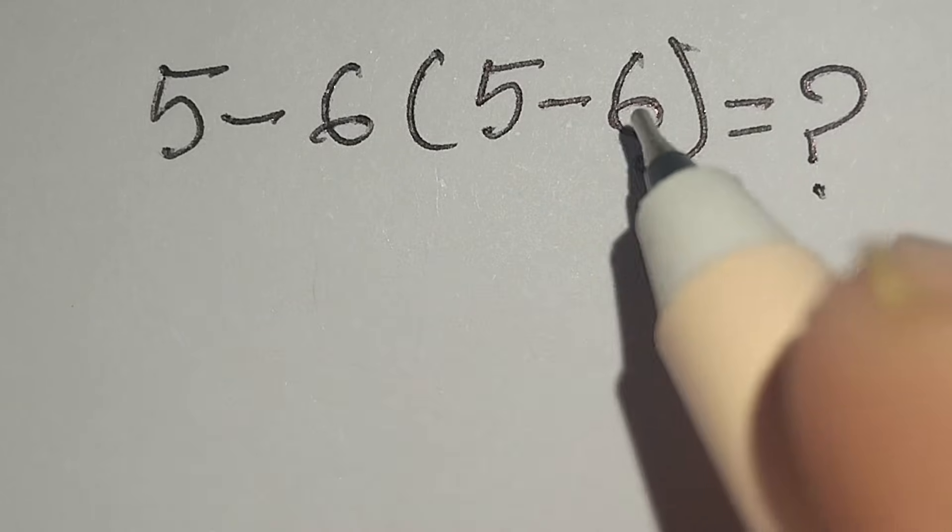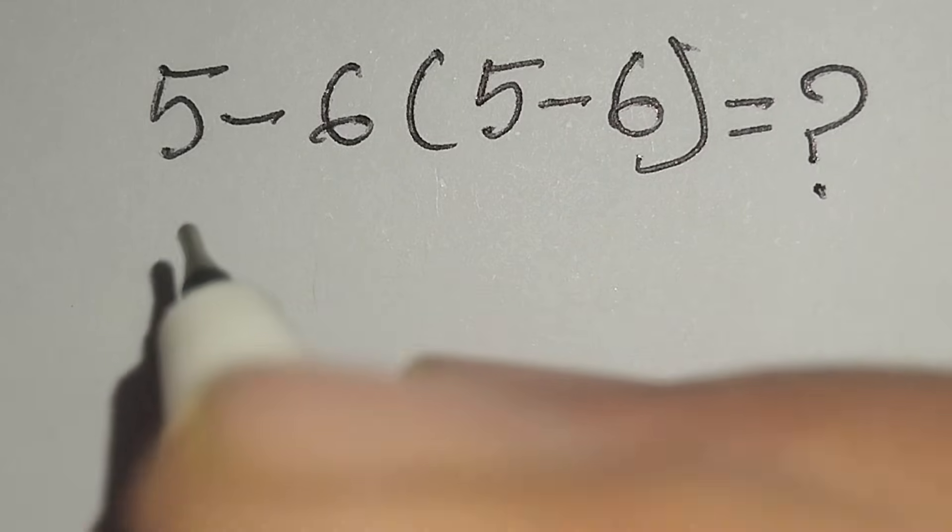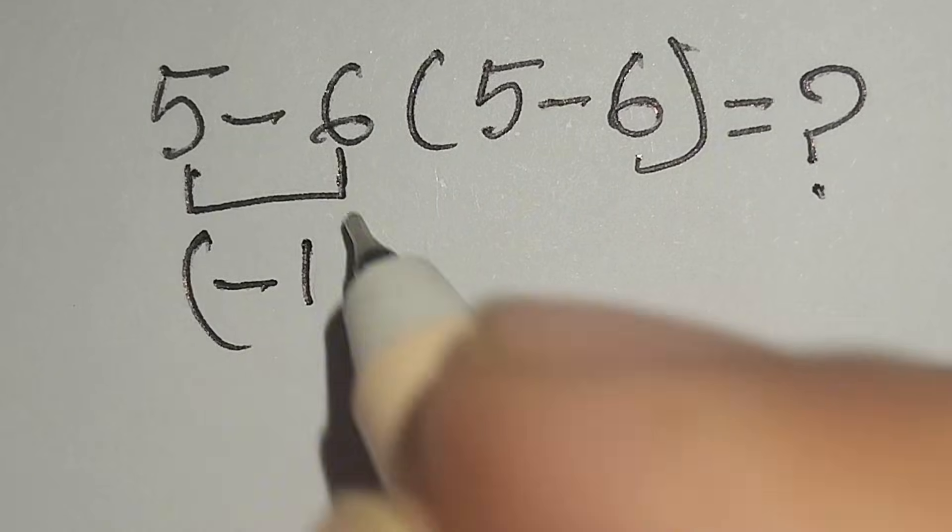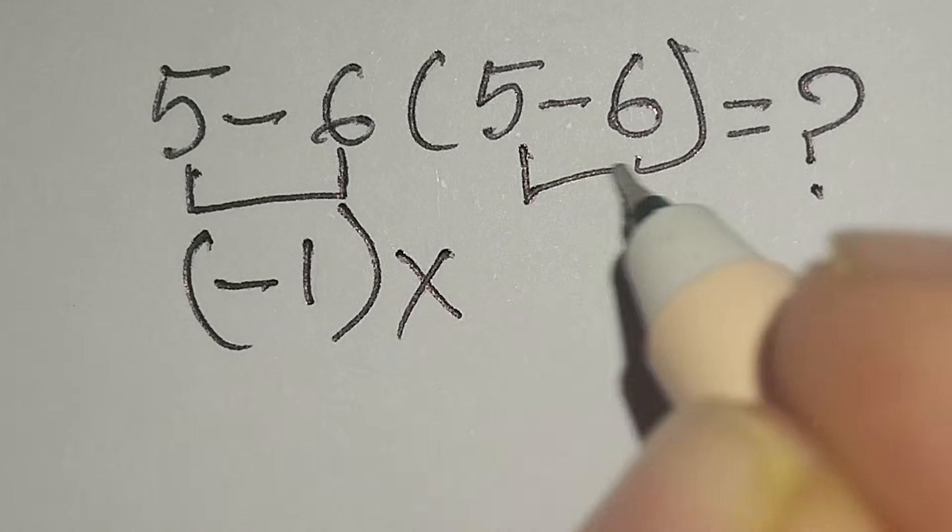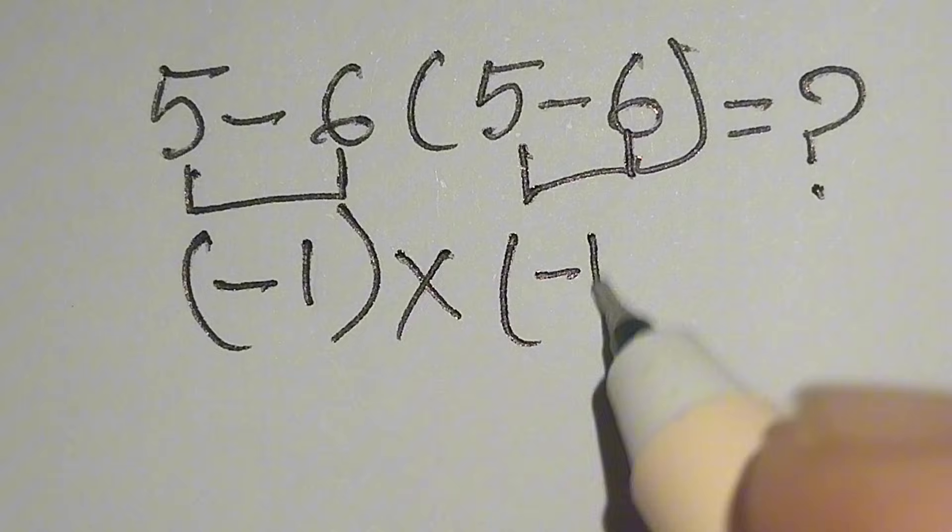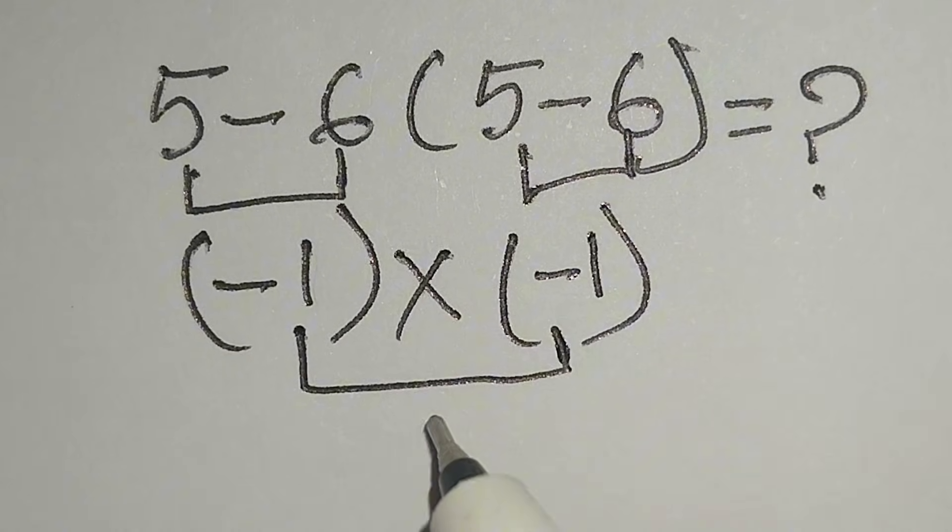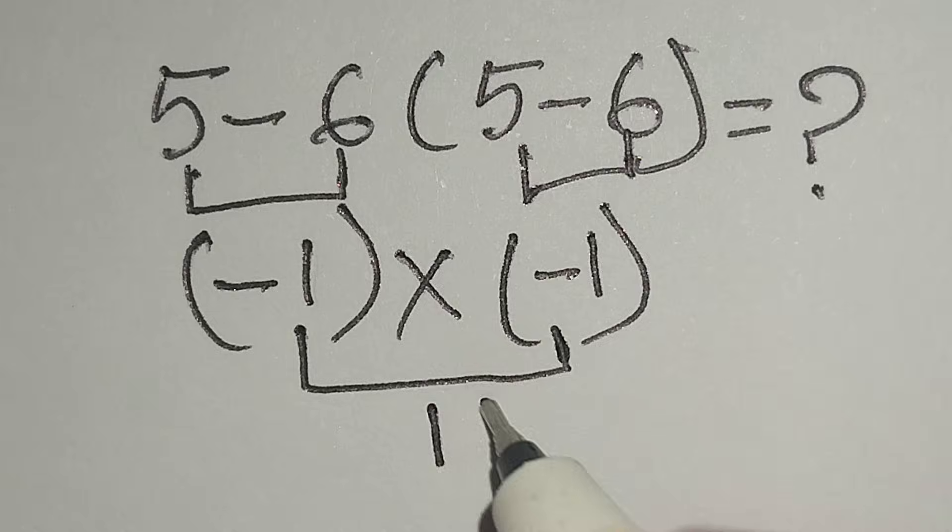Five minus six bracket five minus six equals what? Here, five minus six gives us negative one. Multiply five minus six gives us negative one. Negative one times negative one gives us positive one, but this answer is not correct.